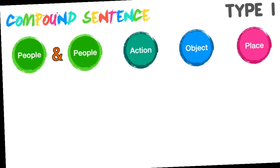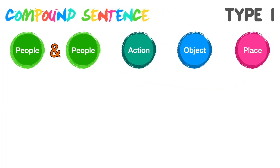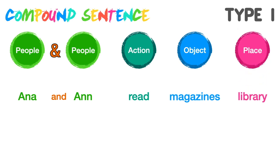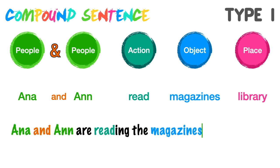Contoh yang berikutnya. The first people is Ana. And the second people is Anne. The action is: Read. The object is: Magazine. The place is: Library. The full sentence — all together: Ana and Anne are reading the magazines in the library. Ana and Anne are reading the magazines in the library. Senang kan adik nak buat compound sentence? Ini adalah Type 1, jenis yang pertama.